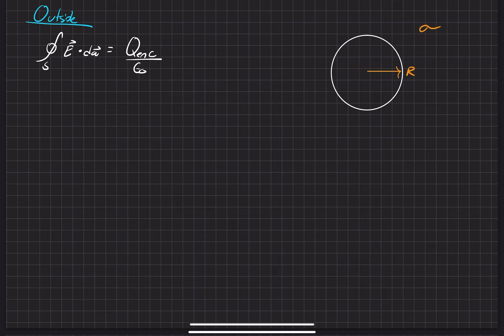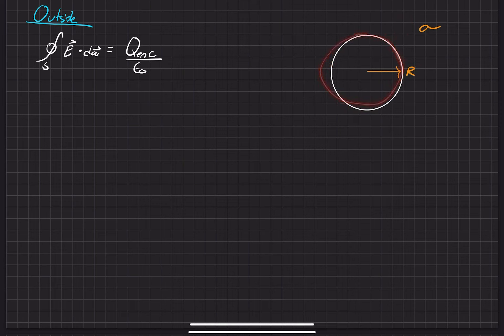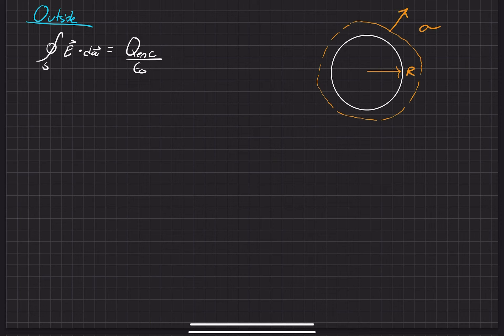We'll begin by deciding our Gaussian surface. Typically for a Gaussian surface, we want one whose normal vector aligns with the normal vector of the charge — the radius we have here. Since we have a sphere, a good Gaussian surface we can use that also has an aligned normal vector is a sphere as well. When we look at the surface normal, it is directly in line everywhere with the one from the spherical shell.